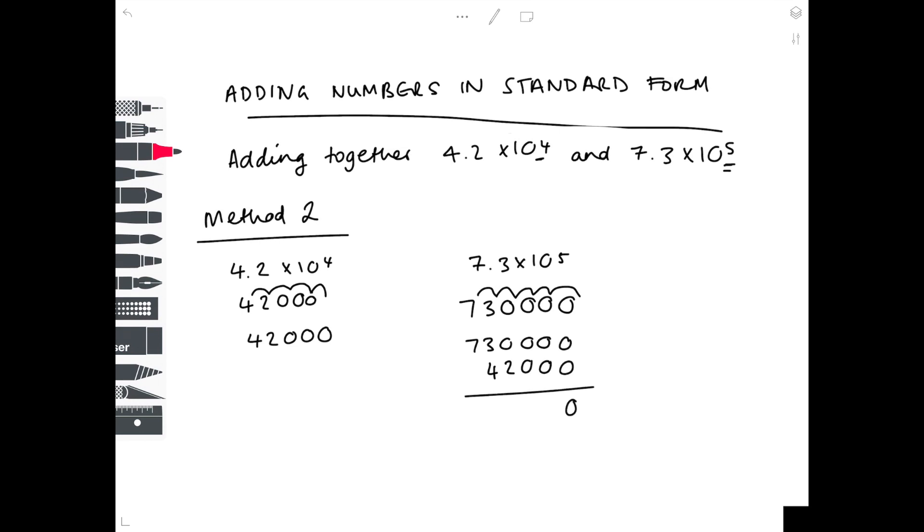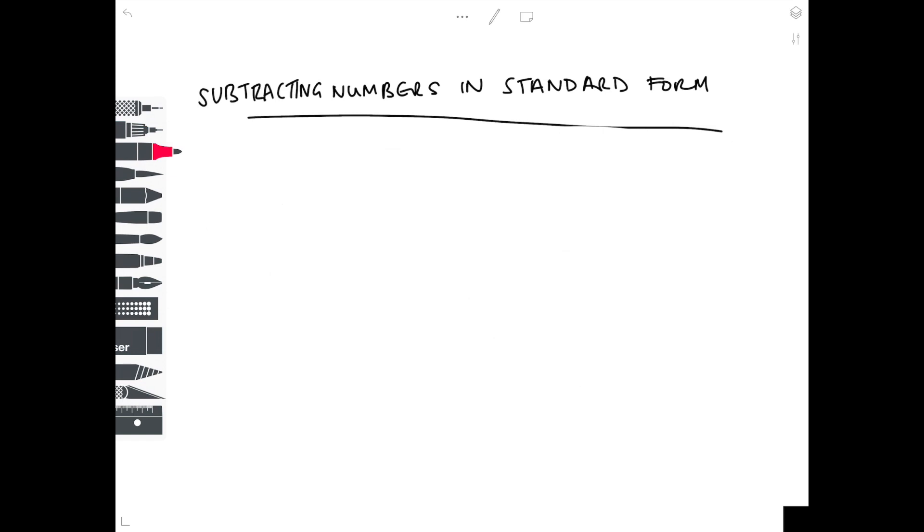Then because we need our answer in standard form, let's put that decimal point back in, work out how many times the decimal point moved. It's 5, so our answer is 7.72 times 10 to the 5, which was the same as the answer for method one. Both methods work.